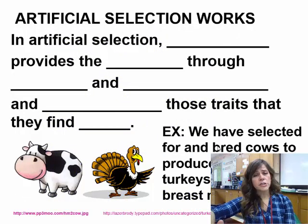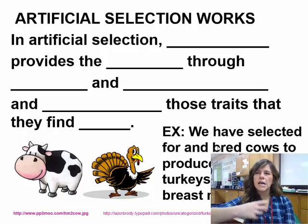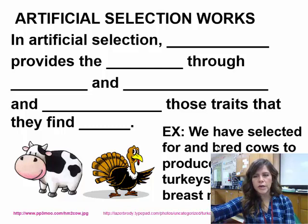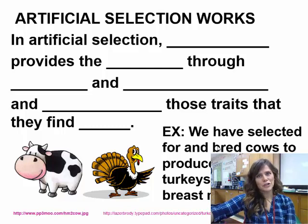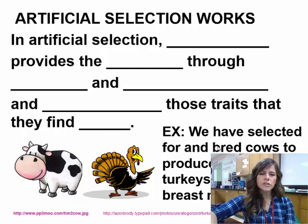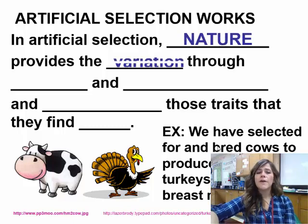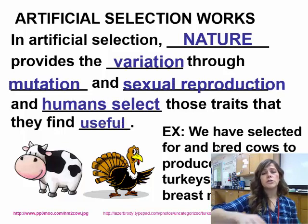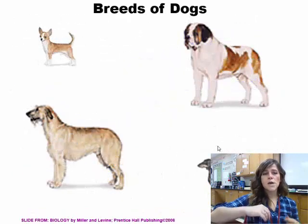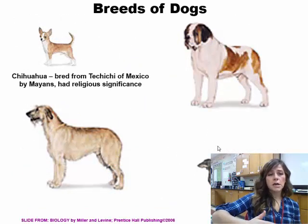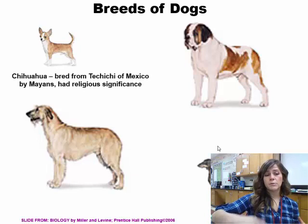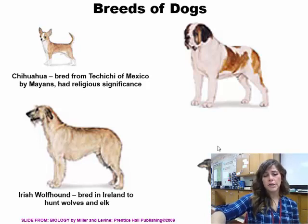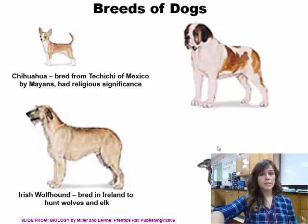Artificial selection: Darwin used artificial selection to think about how, instead of people selecting for certain traits, nature is going to select for certain traits. In artificial selection, nature provides variation through mutation and sexual reproduction, and humans then choose the traits they find useful. For example, we have these dog breeds. In Mexico, the Chihuahua had religious significance. In Ireland, the Wolfhound was bred to hunt wolves, so their stature was important.